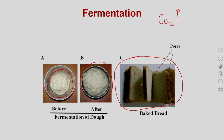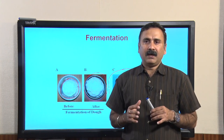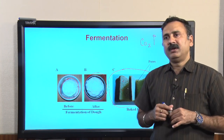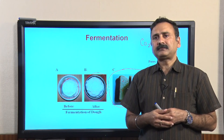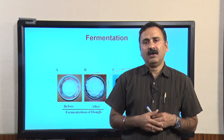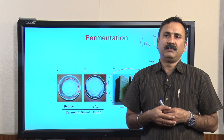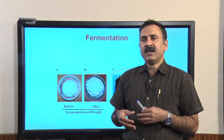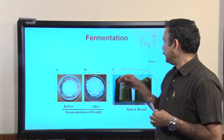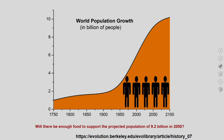Apart from making different types of products, the main aspect of biotechnology is to improve the yield or productivity of food grains from plants as well as food items from microorganisms. The increase in productivity is important because the human population is increasing, and the estimated human population is going to be 9.2 billion.